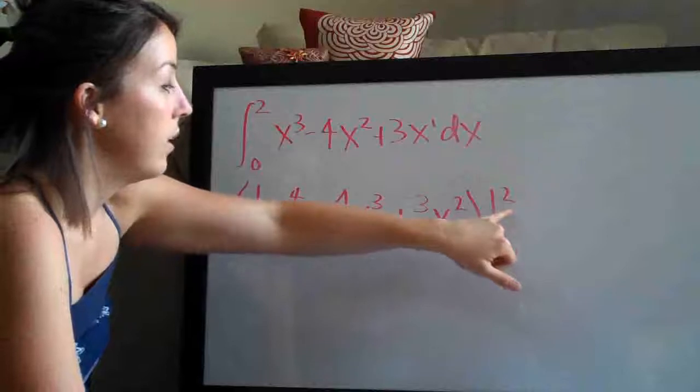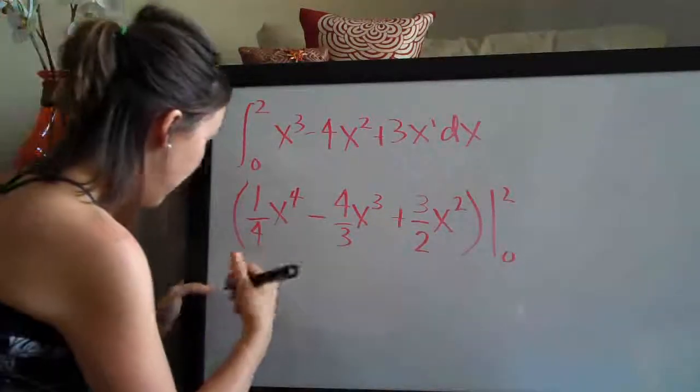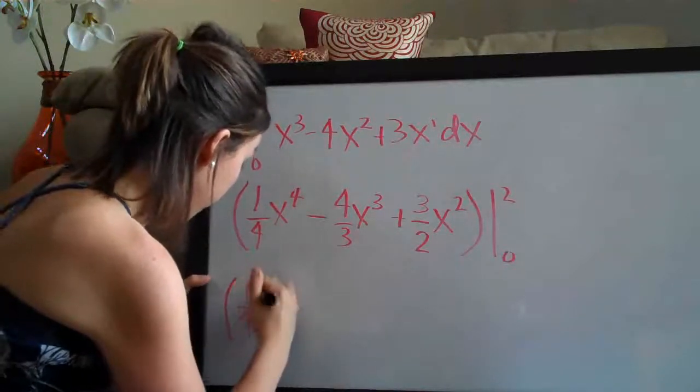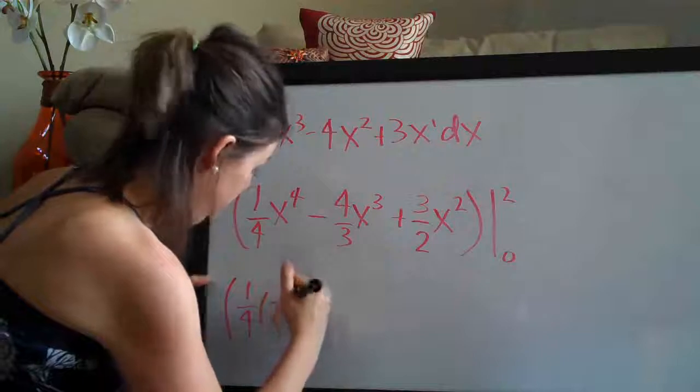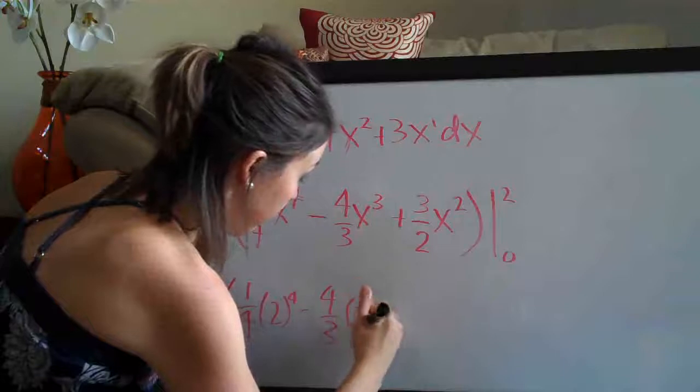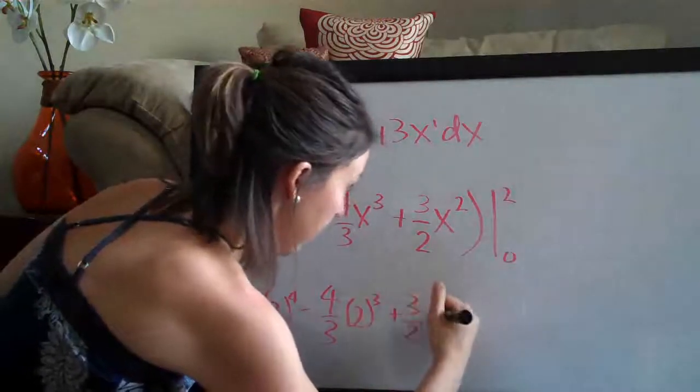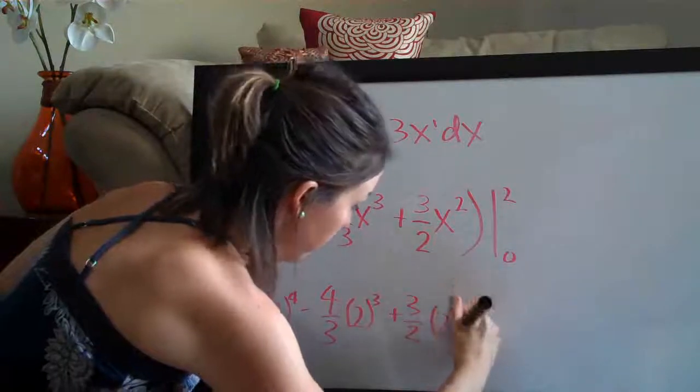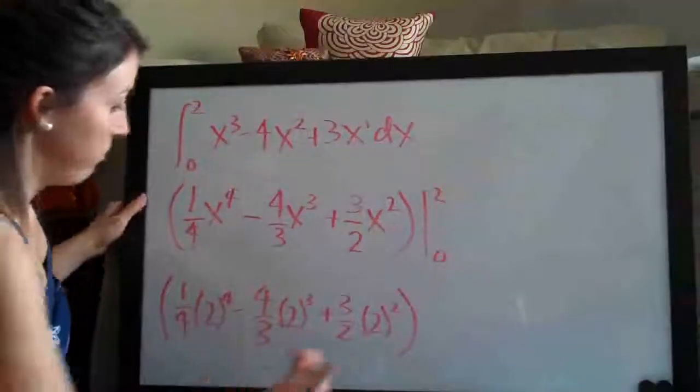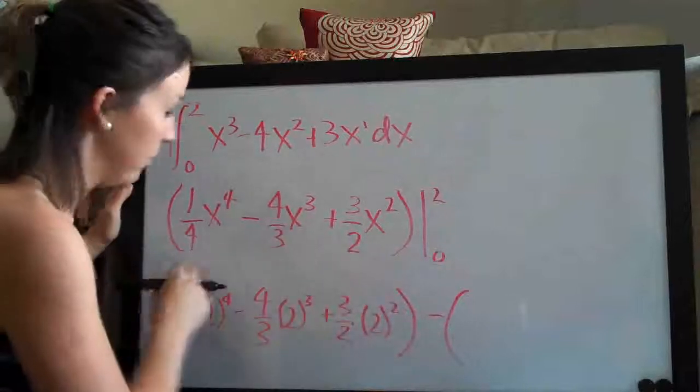So the first thing we want to do is plug in 2 to this whole function. So let's go ahead and do that. We'll get 1 fourth times 2 to the fourth minus 4 thirds, 2 to the third plus 3 halves times 2 squared. So we plug in 2 to this whole function and then we subtract everything when we plug in 0.